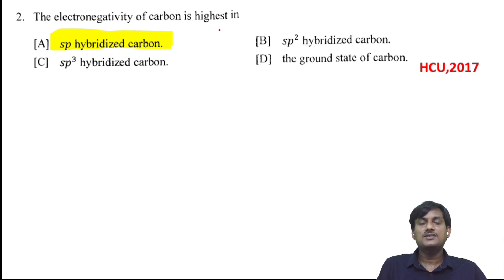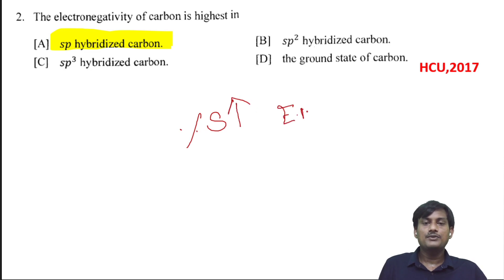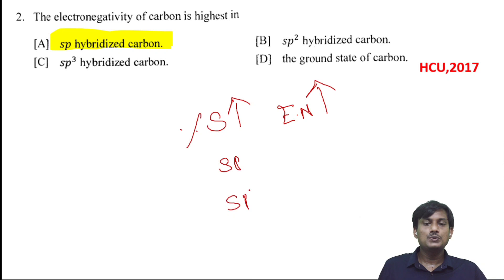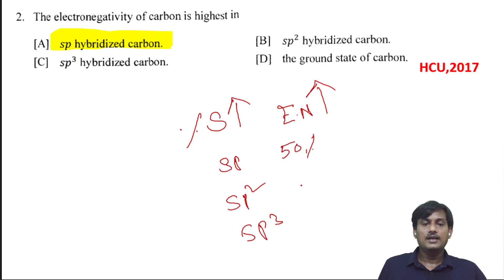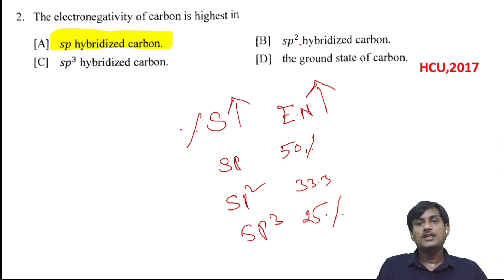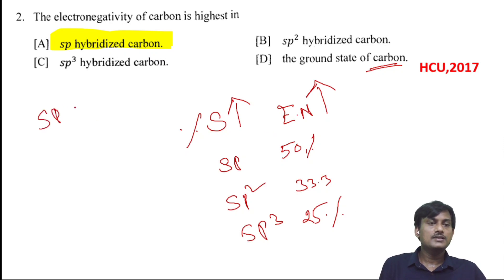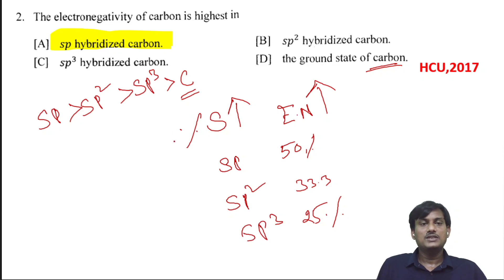The electronegativity of carbon depends on hybridization. As s-character increases, the electronegativity of an atom increases. For sp hybridization, s-character is 50%; for sp2, it is 33.33%; and for sp3, it is 25%. So the order of electronegativity is: sp > sp2 > sp3. The ground state carbon has the least electronegativity value, and sp hybridized carbon has the highest electronegativity.